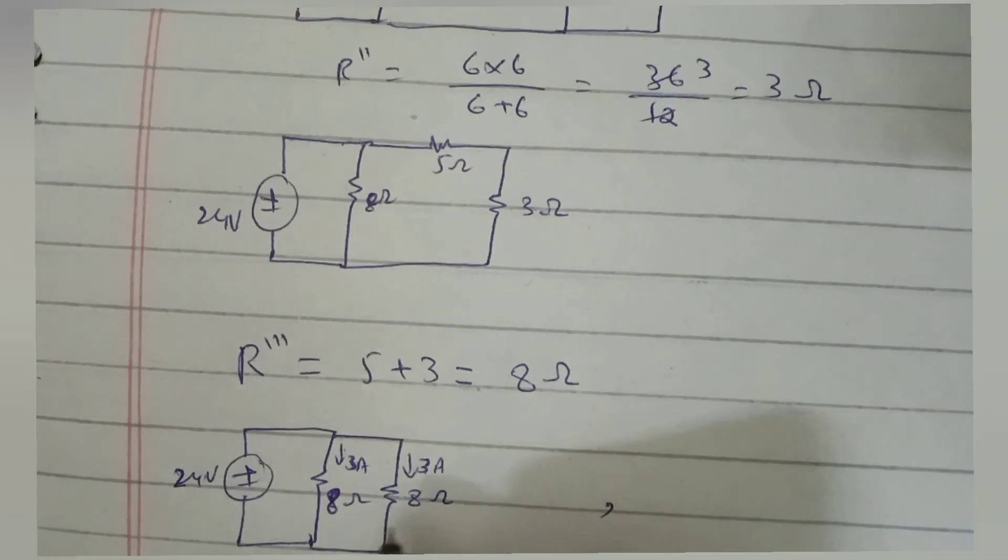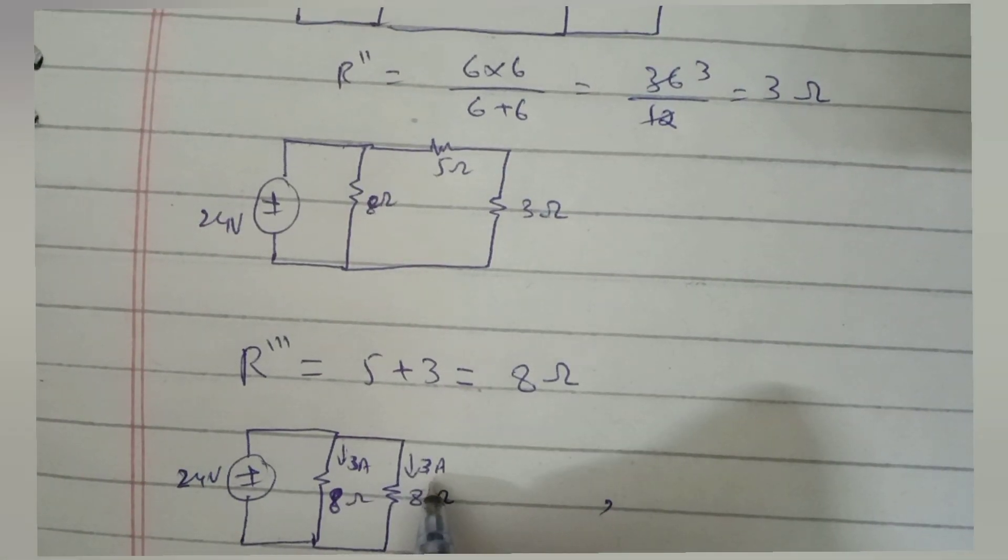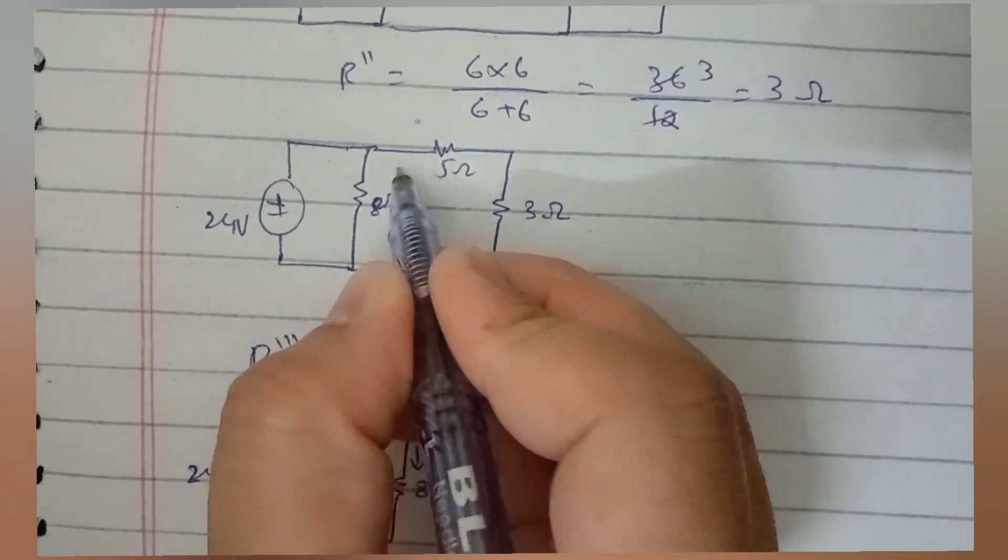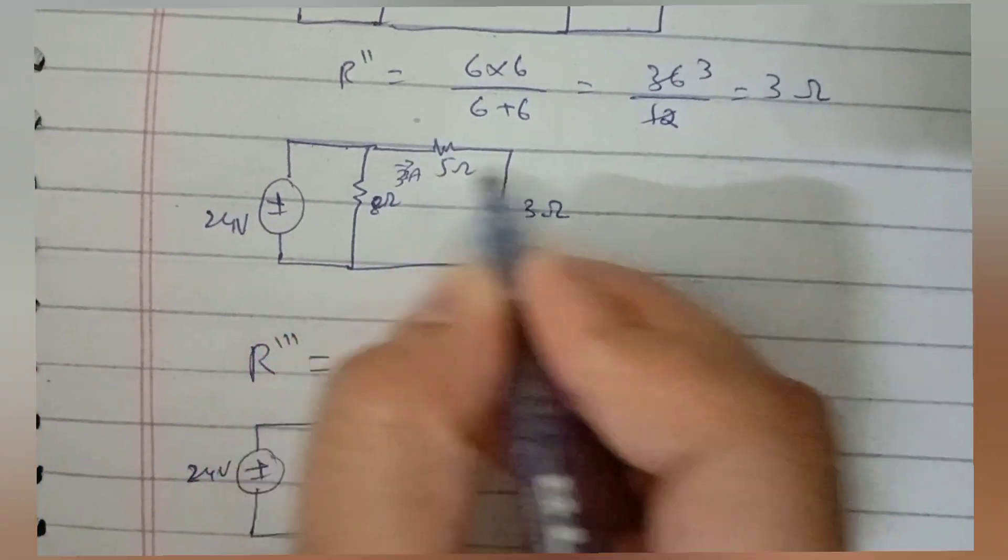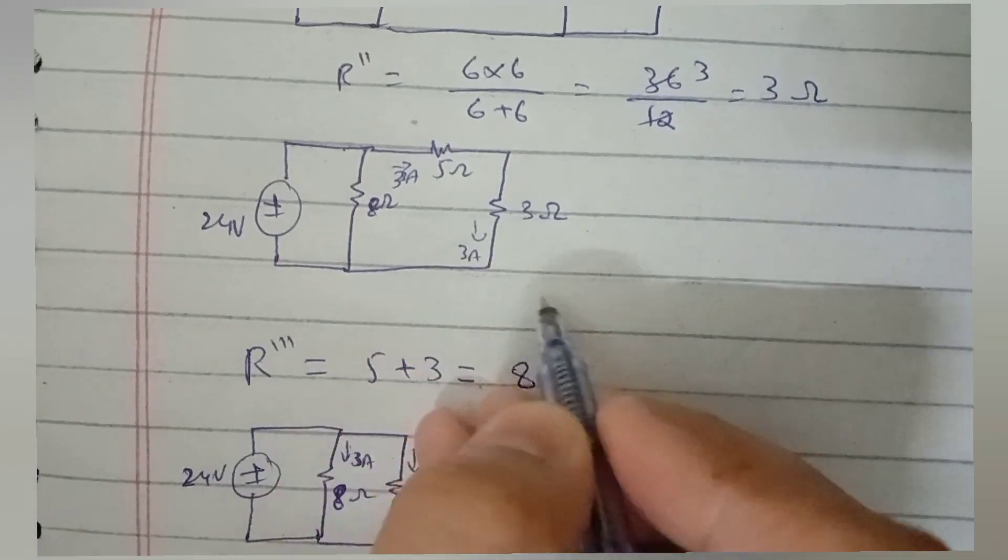Going one step back, we realize that 3 amperes will flow through 5 ohm resistor and also in 3 ohm resistor, as they are connected in series and we know in series current remains the same.